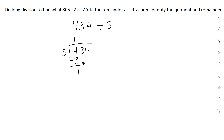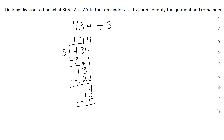Bring down the 3. Now we want to get as close to 13 as possible. 3 times 4 will give you 12. Change the sign. 13 minus 12 is 1. Bring down the next number. 3 times what? 4 again. 3 times 4 is 12. Change the sign. We get 2. So your answer is 144 and 2 thirds. This is called your quotient, and this is your remainder.